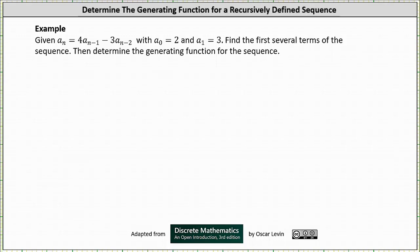Welcome to an example on how to determine the generating function for a recursively defined sequence. We are given a sub n equals four times a sub n minus one minus three times a sub n minus two, with a sub zero equals two and a sub one equals three. We are asked to find the first several terms of the sequence, then determine the generating function for the sequence.